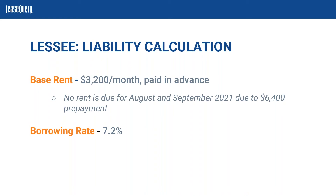Recalling the components we discussed, we had some base rent payments — monthly payments of $3,200 a month, paid in advance on the first of each month. We also had some prepaid rent: at the execution date, the lessee made a prepayment for two months of rent worth $6,400. So no rent is going to be due for those two months of August and September of 2021 due to that prepayment.